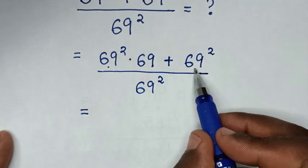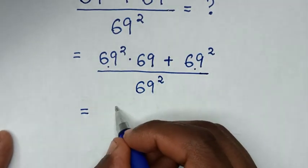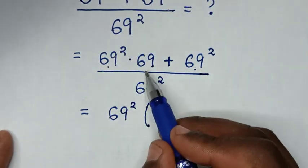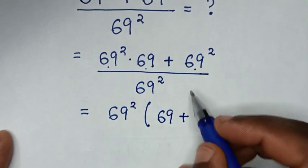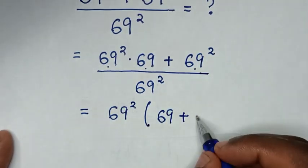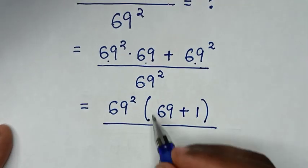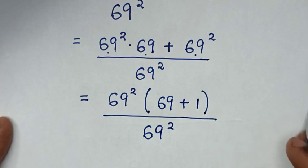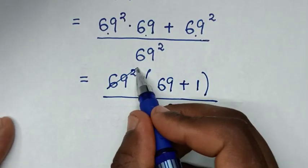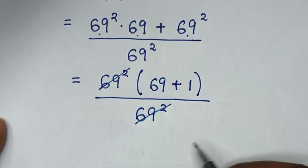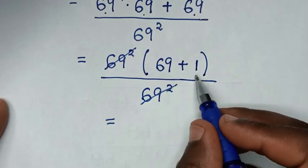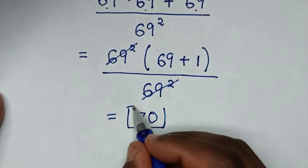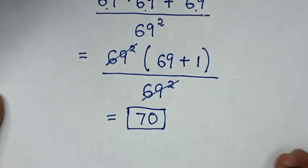From the numerator 69 power 2 is common, so we take 69 power 2 out of the bracket. Inside the bracket we have 69 plus 1. This divided by 69 power 2, over 69 power 2. Then 69 power 2 will cancel with the denominator 69 power 2. So it equals 69 plus 1, which is 70. So this is the correct answer.